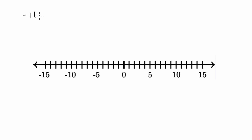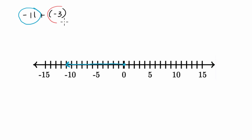So if I were to say negative 11 plus negative three, what would that get us? Negative 11 — I can start at zero here and go to the left 11, past negative five, past negative 10, and negative 11 gets me right over there. And then to that, I am going to add negative three. So I start there and I'm going to go three more to the left: one, two, three. I end up right over there. And where do I end up? That is at negative 14. So this is equal to negative 14.